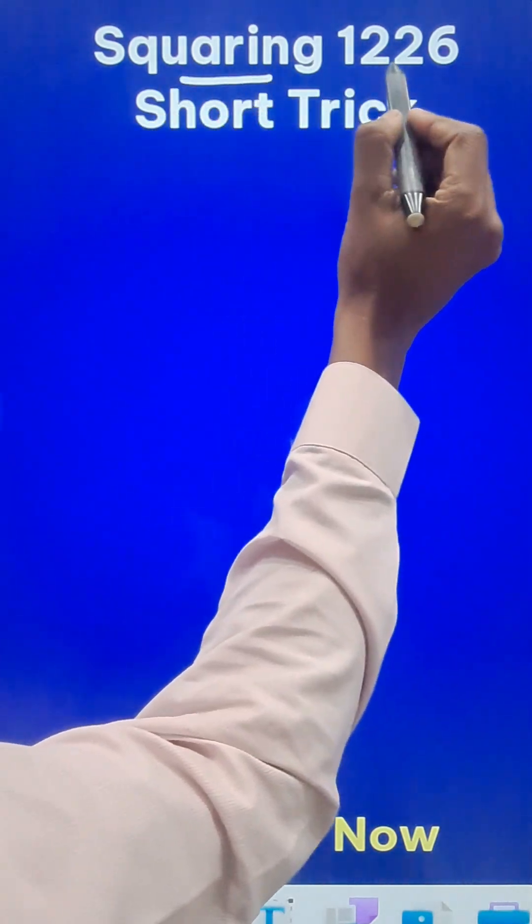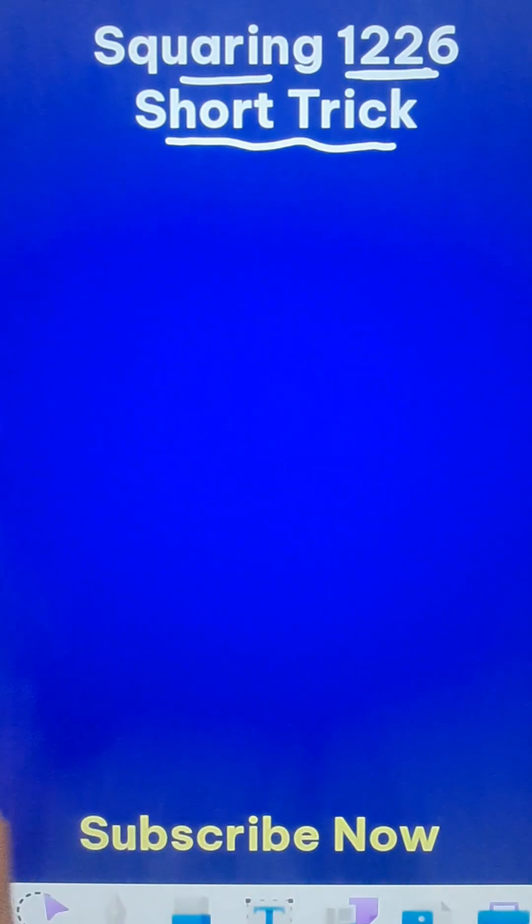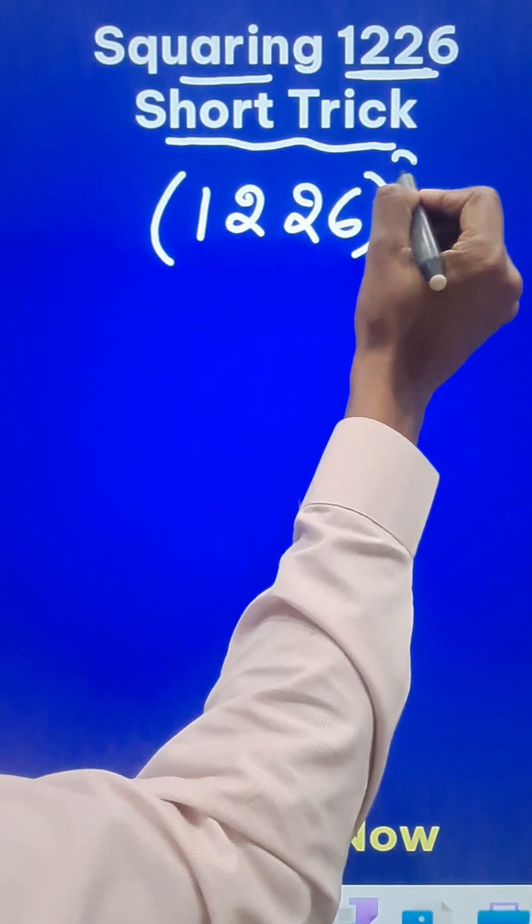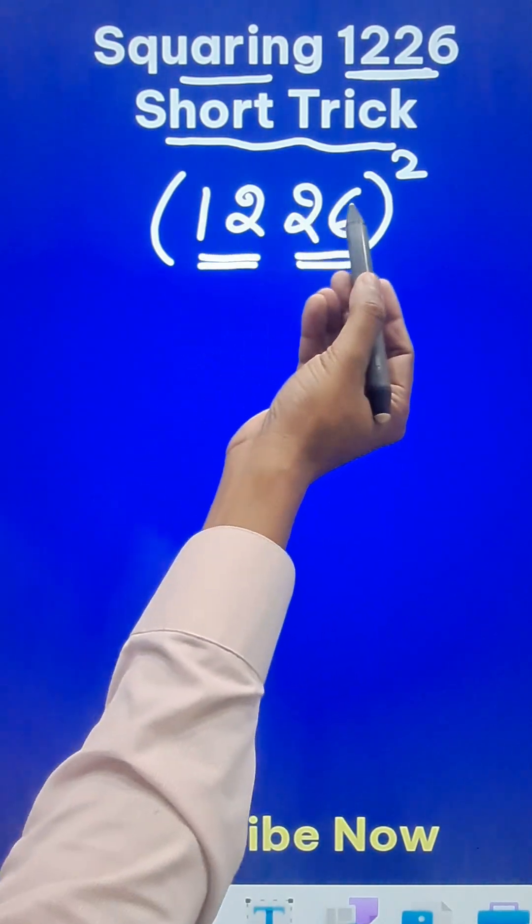Let us find the square of a big number like 1226 using this amazing short trick. So 1226 square. Let's split this number into two numbers of two digits each: 12 and 26.